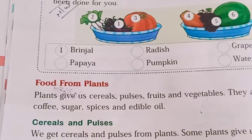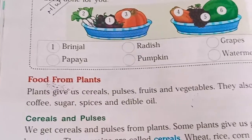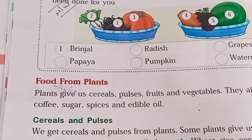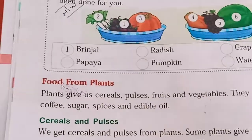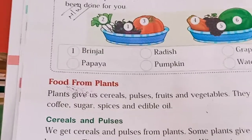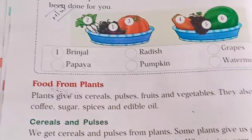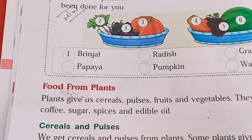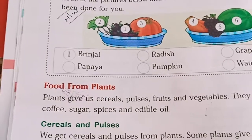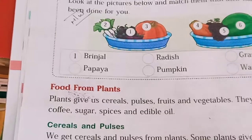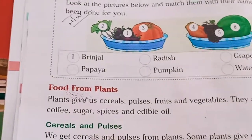Pulses come from seed plants. Examples are pea, gram, and kidney beans. We eat the seeds in pulses — we eat different types of seeds. These seeds of pea, gram, and corn are all pulses.